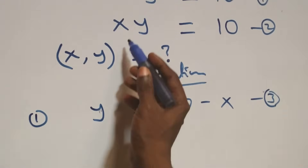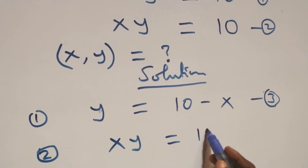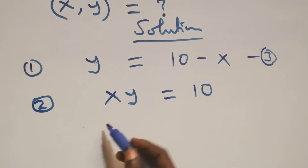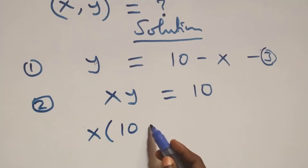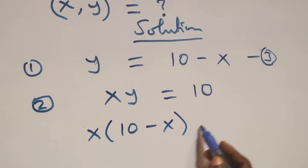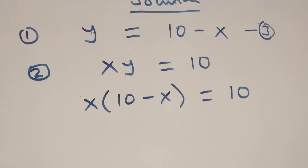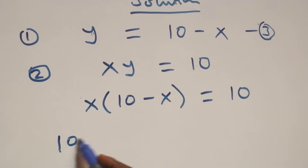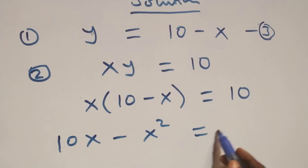From equation two, which is x times y equals 10, we substitute the value of y. So y is replaced by 10 minus x, giving us x times (10 minus x) equals 10.